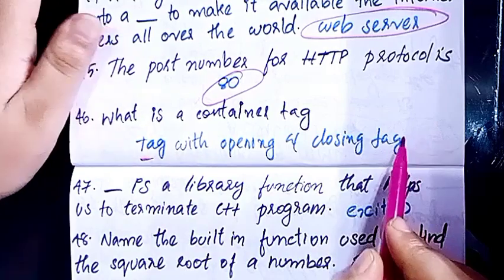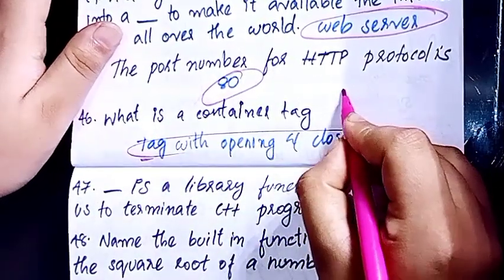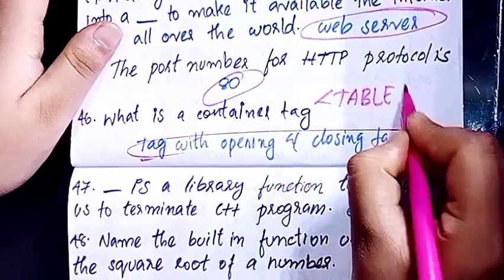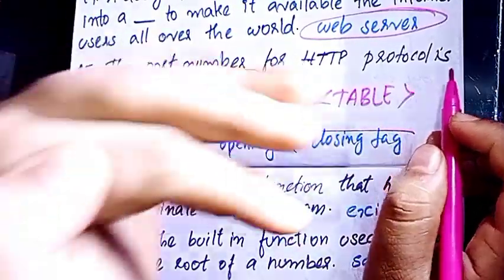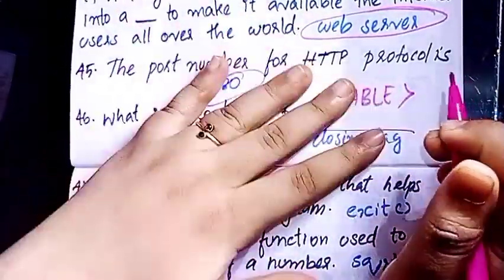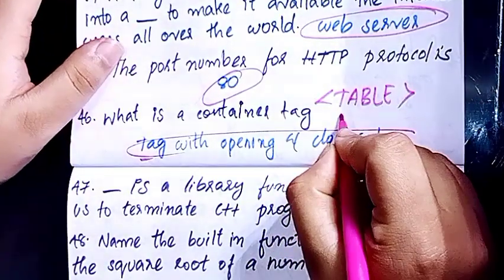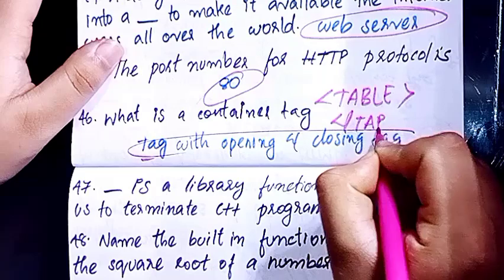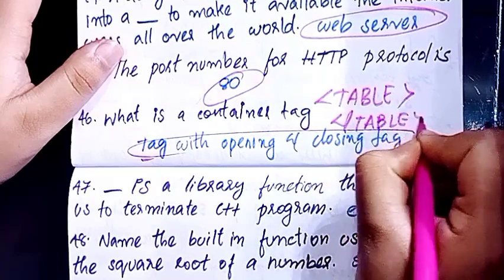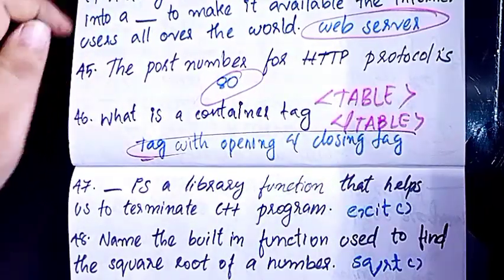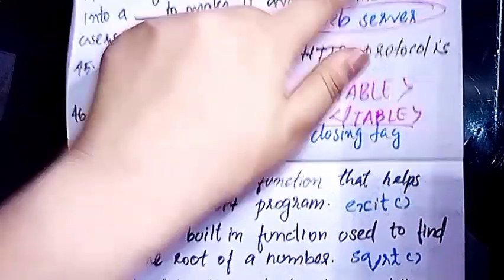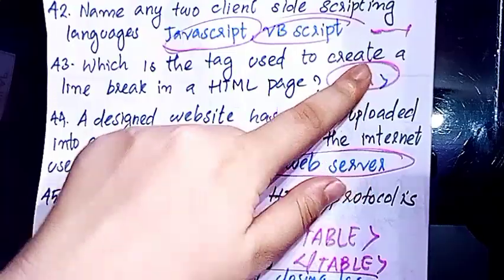A container tag means it has an opening and closing tag. Then we have the BR tag and the MT tag — these are empty tags without a closing tag.